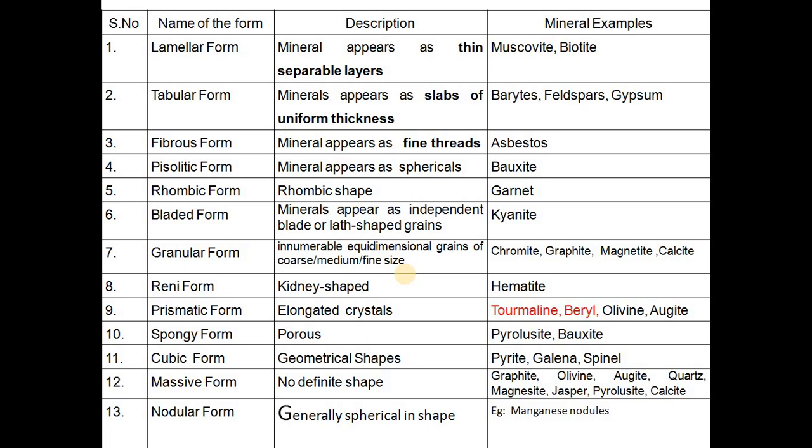Massive form is another type which has no definite shape — so many minerals such as alumin, augite, quartz, magnesite, jasper, pyrolusite, and sometimes even calcite may not be identified due to its improper shape. Nodular form is exhibited by manganese nodules, generally spherical in shape.